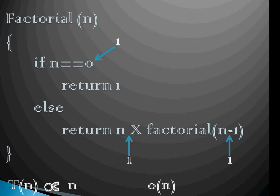Then we have a multiplication operation here that we perform after we get a return from factorial of n minus 1. So this is one unit of cost. And we performed a subtraction here to calculate n minus 1 which is another one unit of cost.